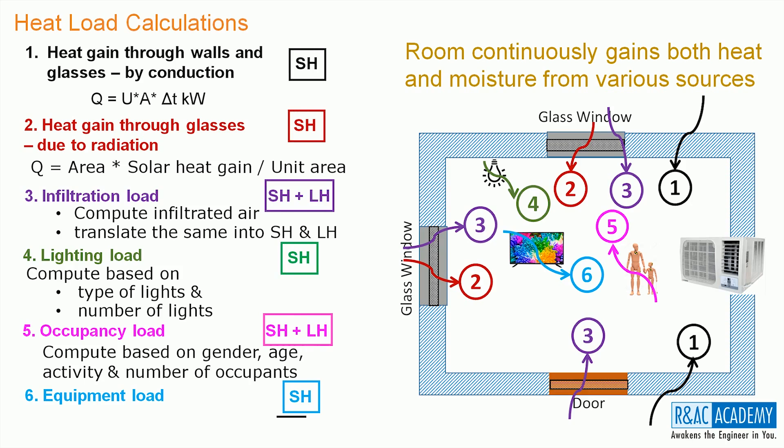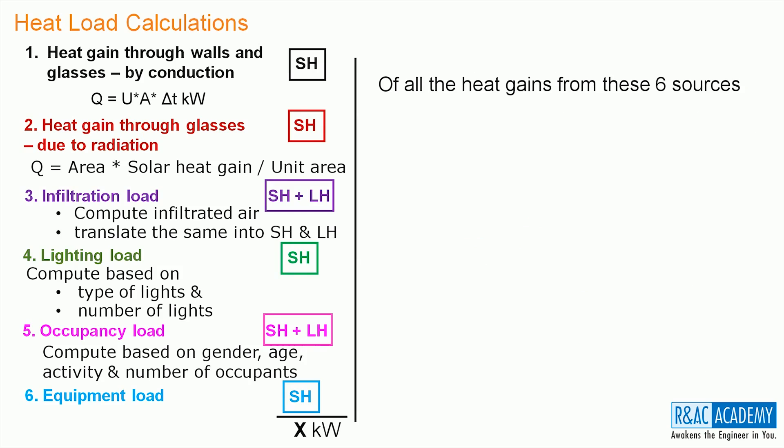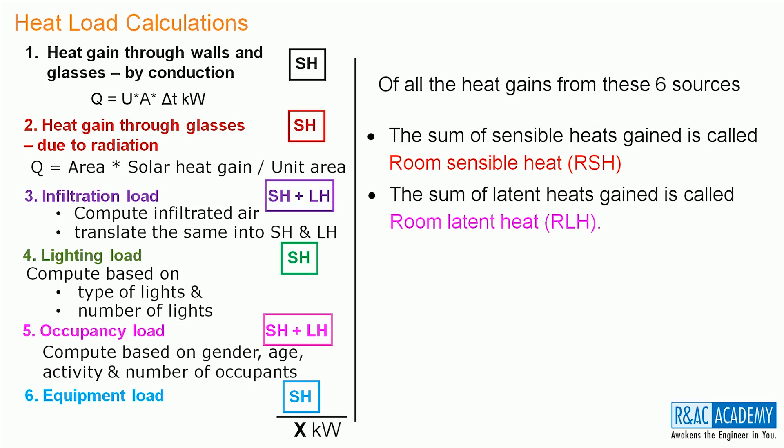Let us sum up the heat gains from these six sources and let that be x kW. Of all the heat gains from these six sources, the sum of sensible heats gained is called room sensible heat and the sum of the latent heats gained is called room latent heat. Finally, the sum of the RSH and RLH is called room total heat. Therefore, RTH equals x kW.